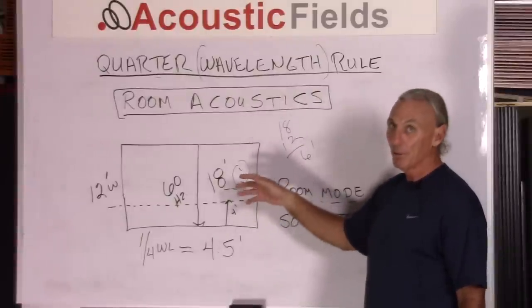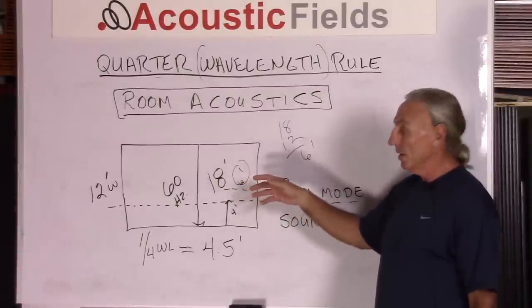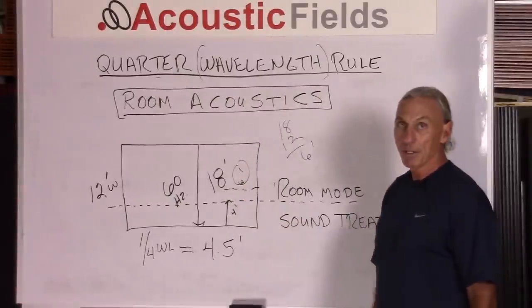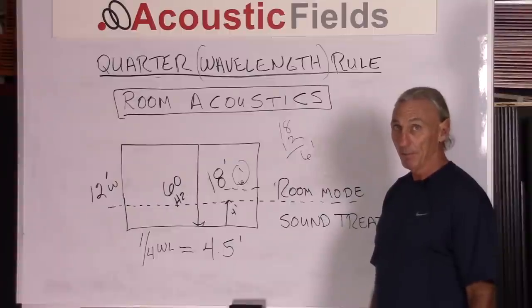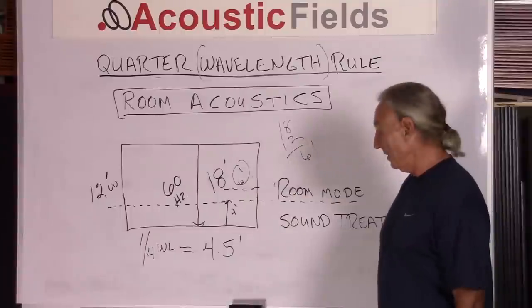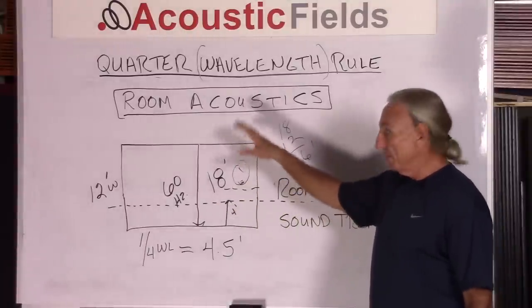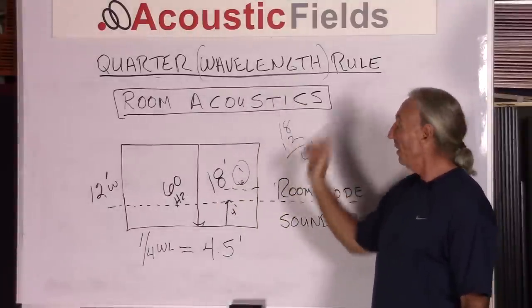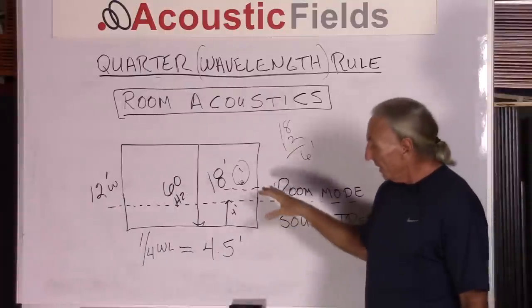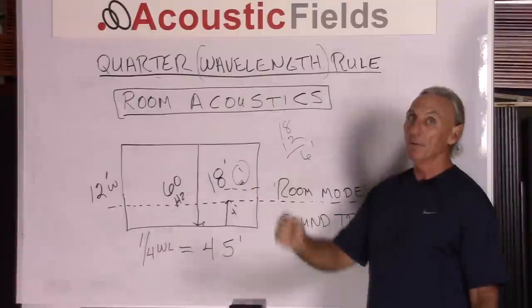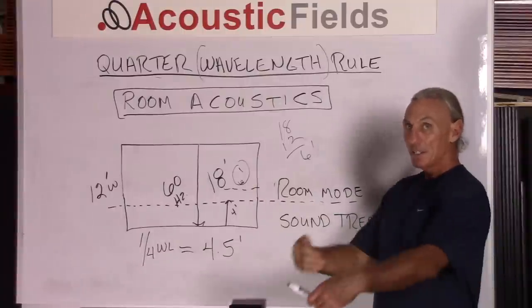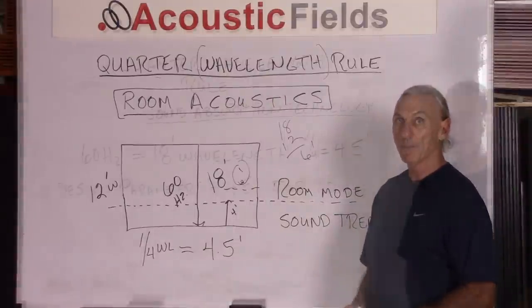Now, where is that position? Well, that's the big question. And then secondly, obviously, that position differs between frequencies. So the sound treatment within a room acoustic situation applying quarter wavelength rule is at that 25% of the wavelength mark inside the room depending on their dimensions.